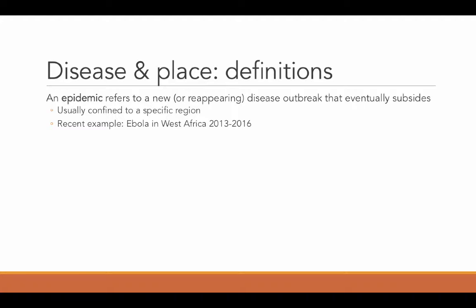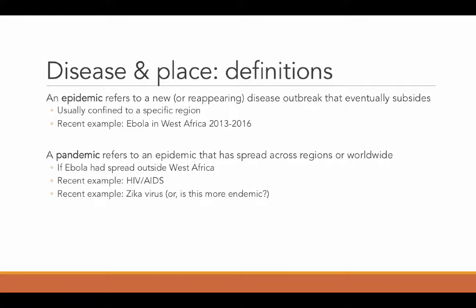So that's an epidemic — something new or that reappears as an outbreak but eventually goes away. A pandemic refers to an epidemic that has spread across regions or worldwide. Ebola did not outbreak in countries outside of Africa, so it remained an epidemic. If the disease had spread when those infected people got home, that would have been considered a pandemic. One common example of a pandemic in recent history would be HIV/AIDS, which has spread worldwide and is a serious and continuing issue in South America and Africa.